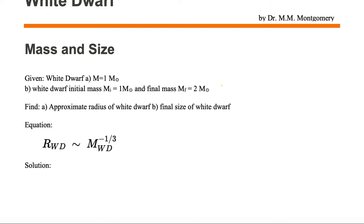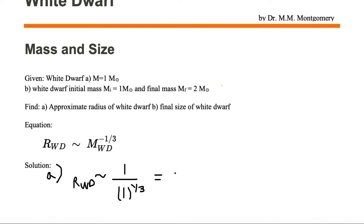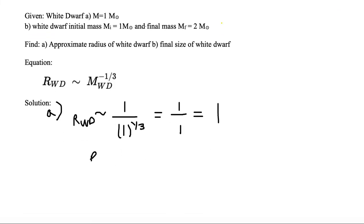In part A, we want to solve for the radius of the white dwarf using this approximate equation. It's approximately equal to one divided by the mass of the white dwarf, which we're given as one, to the one-third power. So the radius of the white dwarf is equal to one divided by one to the one-third power, which is one, and one divided by one is just one. So the radius of the white dwarf is approximately equal to one, and the units are Earth radii.